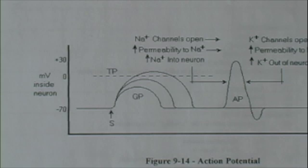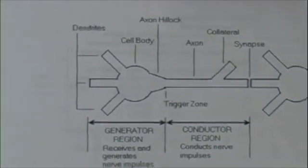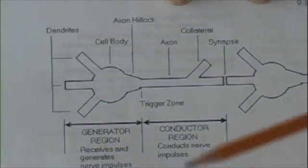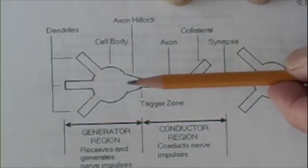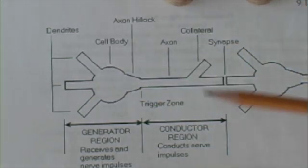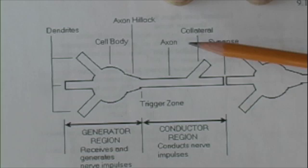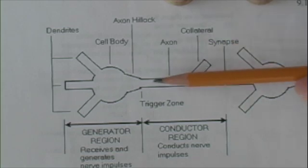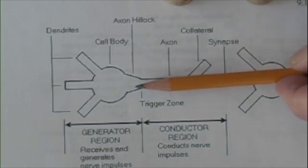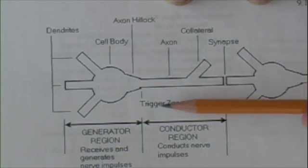How does that graded potential get translated into a nerve impulse? Remember the parts of the neuron. A neuron has a generator region that receives and generates nerve impulses and a conductor region, the axons. Where the axon joins the generator region is an enlargement called the trigger zone. This is the axon hillock.